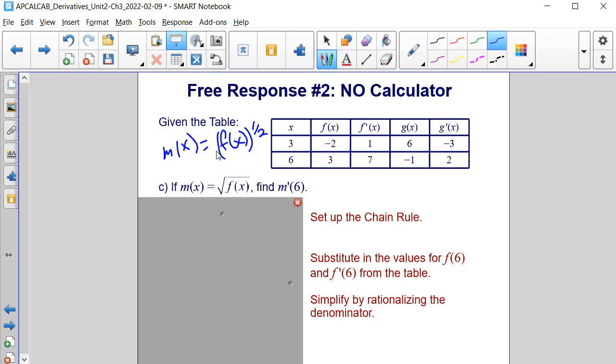So we're going to apply the chain rule here. We are going to bring down, for m prime of x, we're going to bring down the 1 half, and we will have f of x raised to the negative 1 half power times f prime of x. So we need to use both the power rule and chain rule to solve this problem.